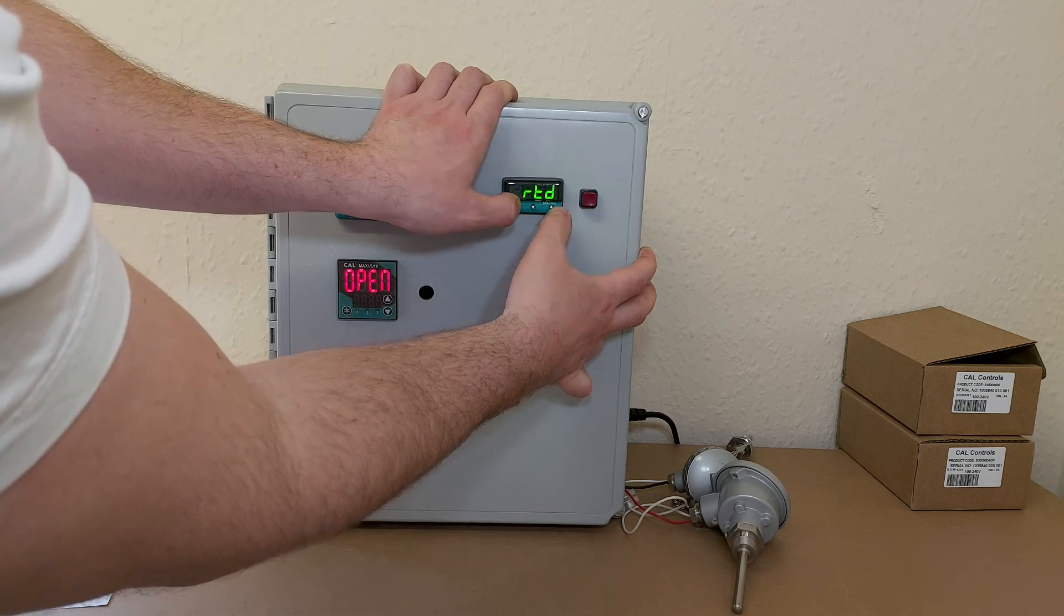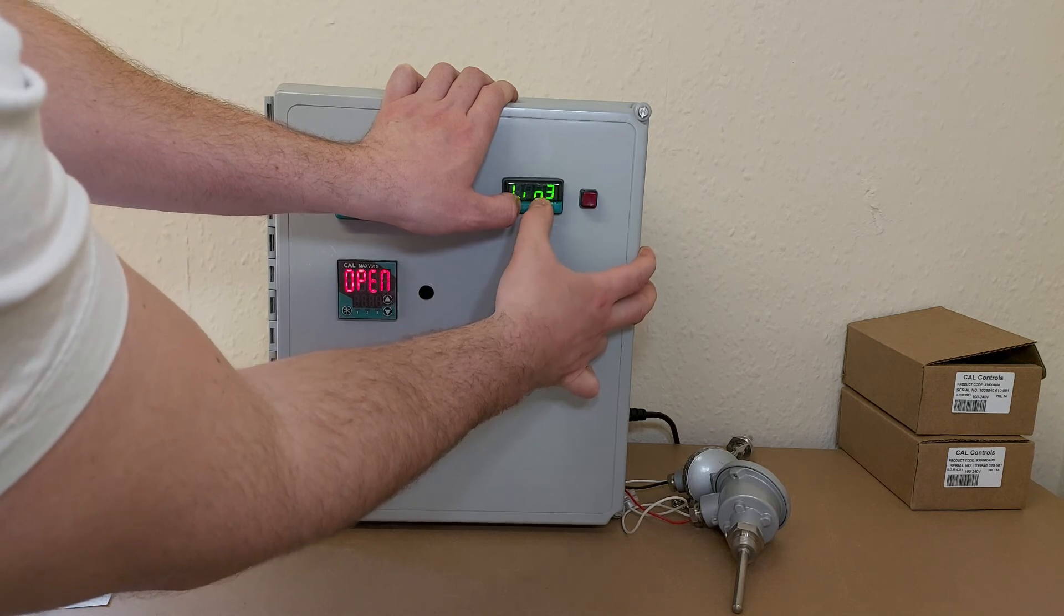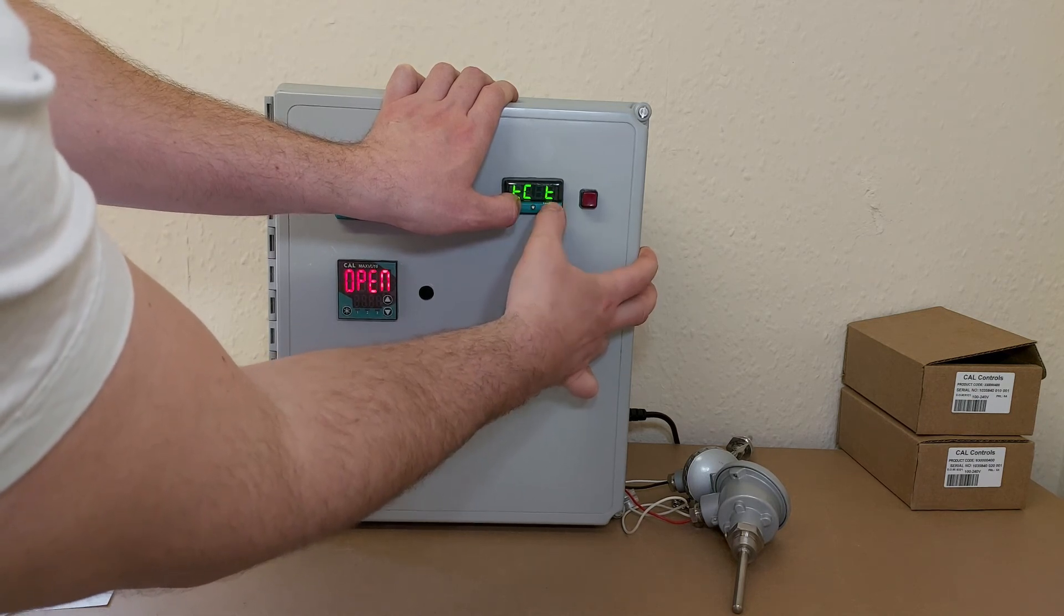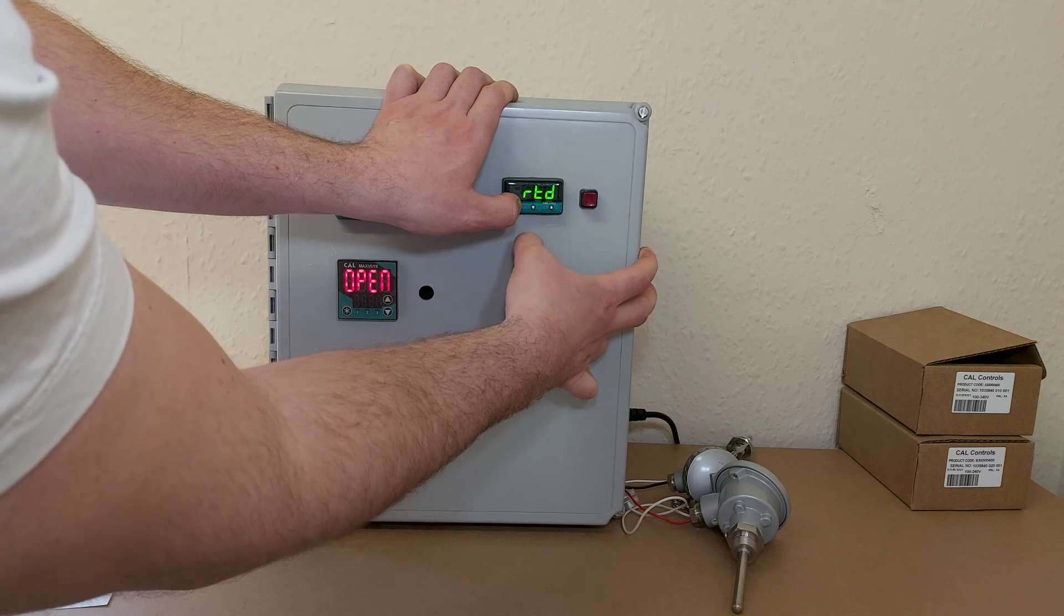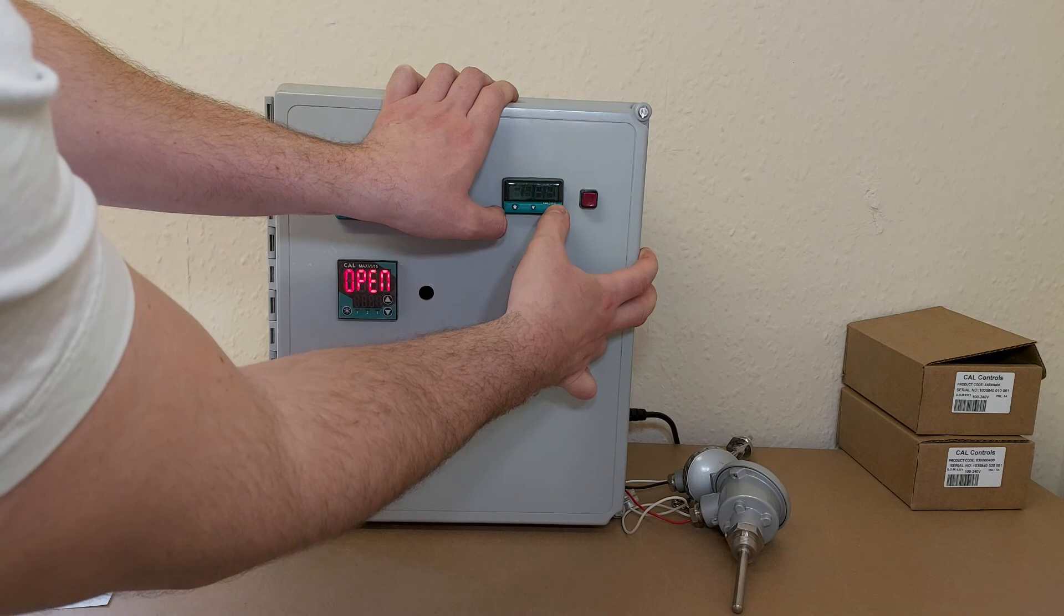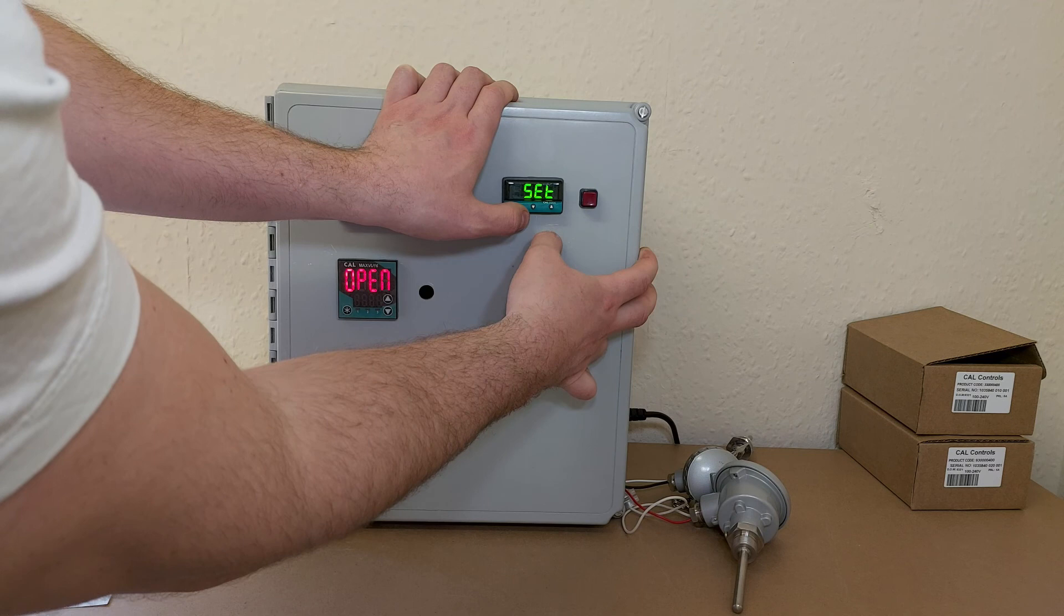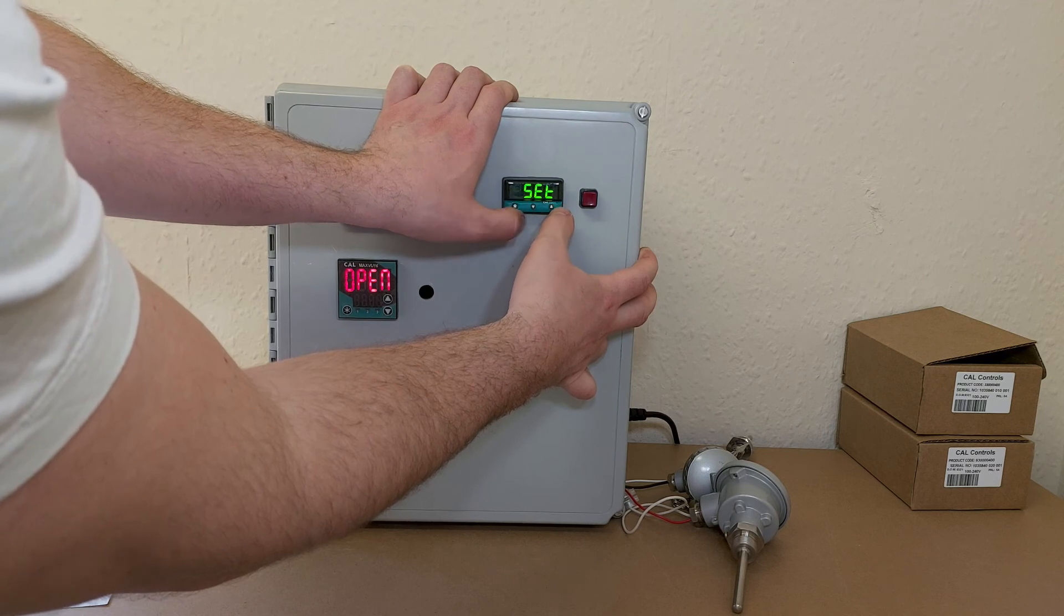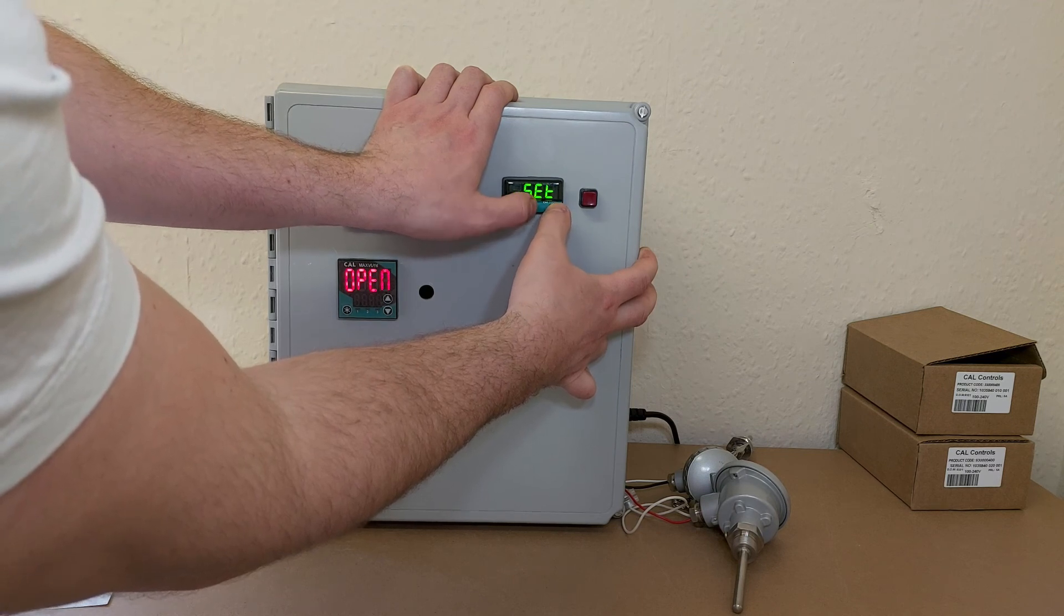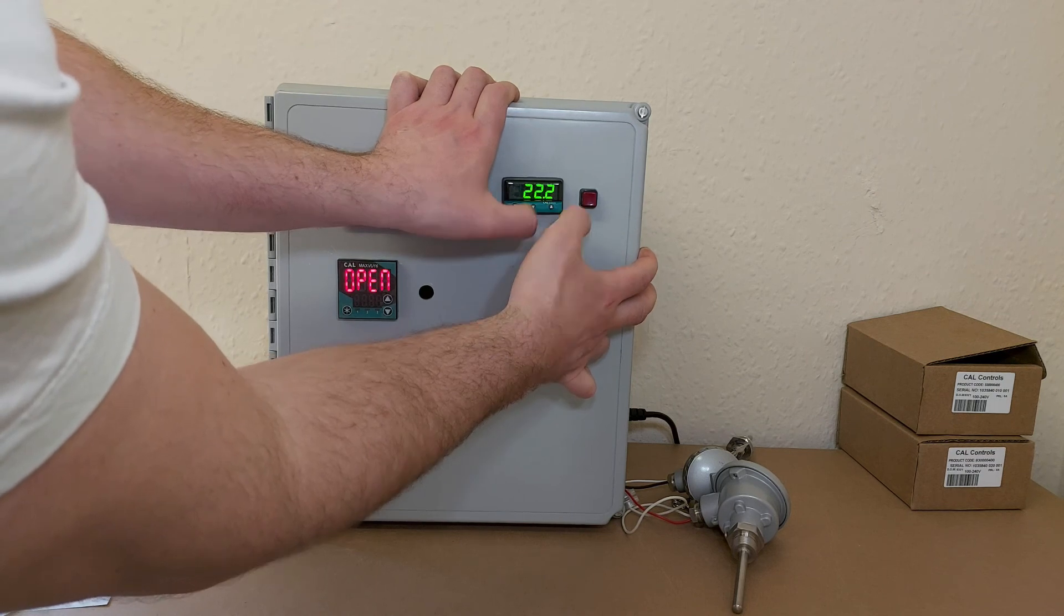Again, we have to hold the star to make our selection. RTD. There we are. Let go. We are done now in the level two menu. So we will just hold the up and down arrows again to get back to operation.